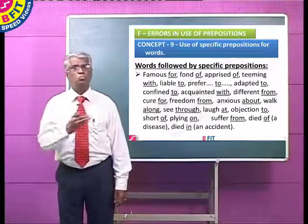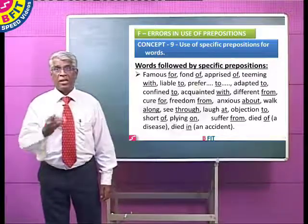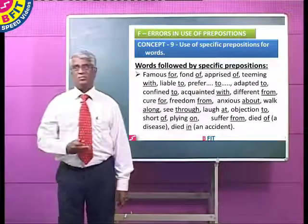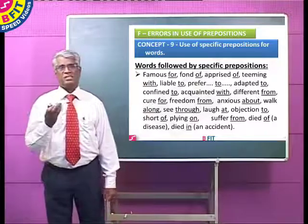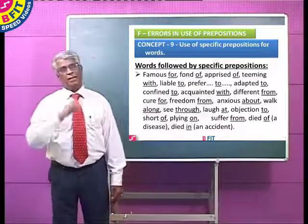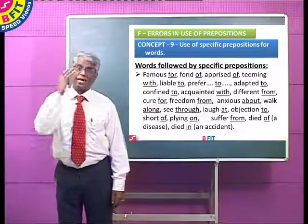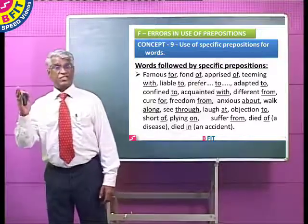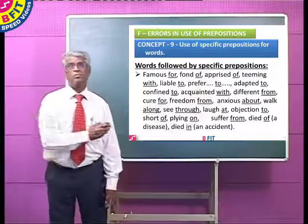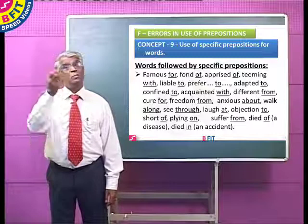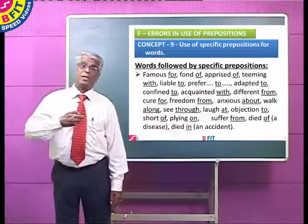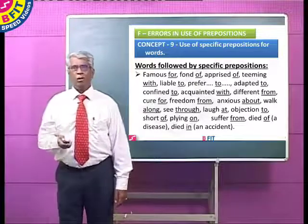'Plying' means moving up and down, to and fro — plying on the road. Suffer from — you always suffer from a disease. Died of — when a person dies of a disease, you say he died of cholera. But when a person is involved in an accident and dies, you say he died in an accident, not 'died of an accident.' These verbs take particular prepositions, so it is better to remember these associations.